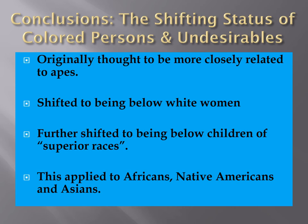They began to shift to the claim that an adult African male is now below the average intelligence of a white woman. Then as we got close to the end of the 19th century, it shifted further — that people of color are at the same intellectual level as children of so-called superior races. This was applied to Africans, Native Americans, and Asians. It shows the racist history that science has had in trying to create classification systems where one group is placed above another.